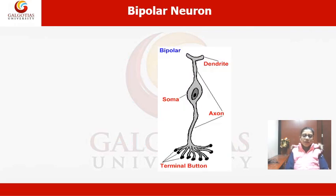In the second lecture on neuroglial cells, we were discussing the classification of neuroglial cells on the basis of their structures, in which we learned about the bipolar neuron. Here we can see the diagram of the bipolar neuron — it has two poles: one is dendrites and the other is the terminal button, which is the endpoint of the axon. You can see different parts of the neuron: first the dendrites, then in the middle the body known as the soma, then the axon, and at the bottom the terminal buttons.